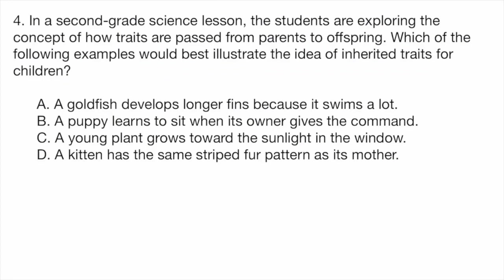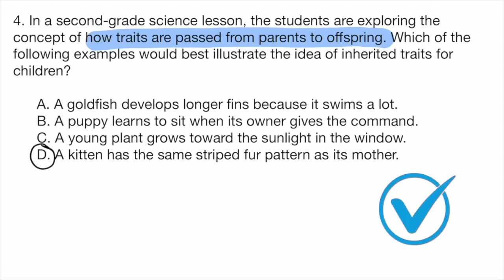Question 4. In a second grade science lesson, students are exploring how traits are passed from parents to offspring. Which of the following examples would best illustrate the idea of inherited traits? A, a goldfish develops longer fins because it swims a lot. B, a puppy learns to sit when its owner gives the command. C, a young plant grows toward the sunlight in the window. D, a kitten has the same striped fur pattern as its mother. The key words here are traits passed from parents to offspring — and only option D mentions a parent. So option D is the correct answer: a kitten has the same striped fur pattern as its mother.